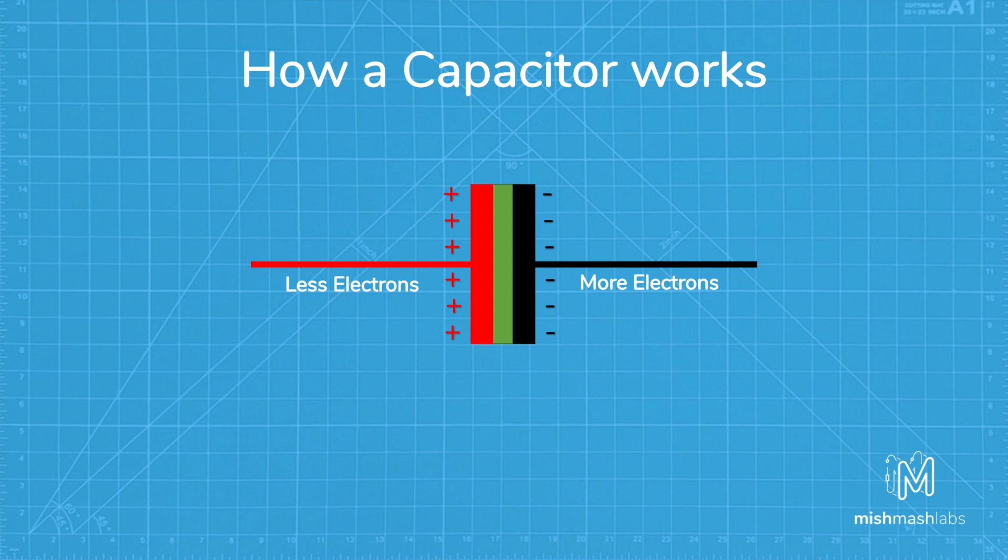The positive and negative charges on each of the plates attract each other, that is until they have somewhere else to go. When charges group together on a capacitor like this, but due to the dielectric sitting between them, the capacitor is storing electric energy, just like a battery. These charges on the plates create an electric field, and this electric field can influence the electric potential energy and voltage of a circuit.